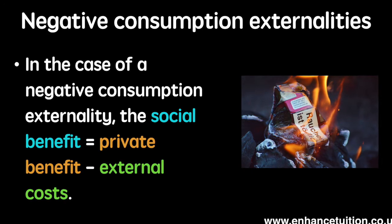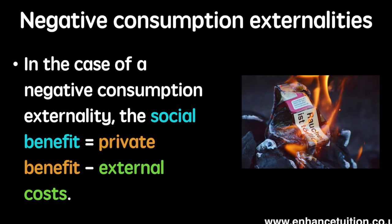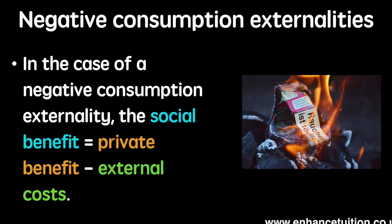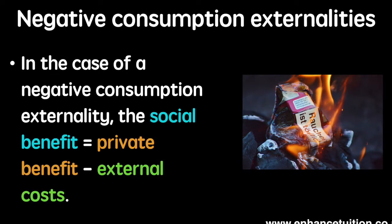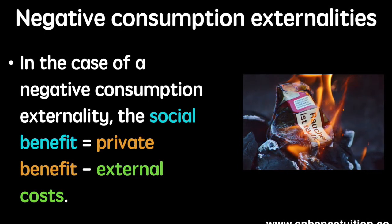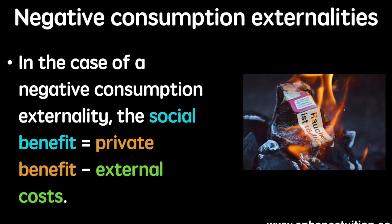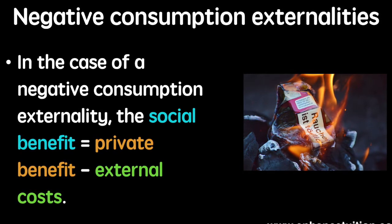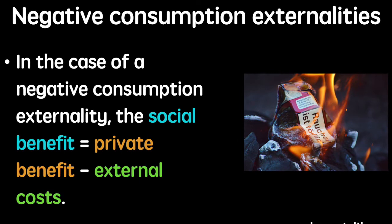The social benefit represents the benefit to society as a whole. The private benefit is the benefit received by the individual consuming the good or service. And the external costs, or the externality, are the cost to a third party not involved in the transaction.